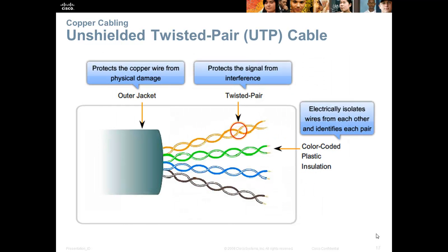This slide shows a diagram of unshielded twisted pair. We have twisted pairs inside an outer jacket that can come in a variety of colors — blue, white, or any color you choose. That outer jacket protects the copper wire from physical damage. Inside, we have color-coded plastic insulation in four colors: orange, green, blue, and brown — each paired with white: white-orange, white-green, white-blue, and white-brown.